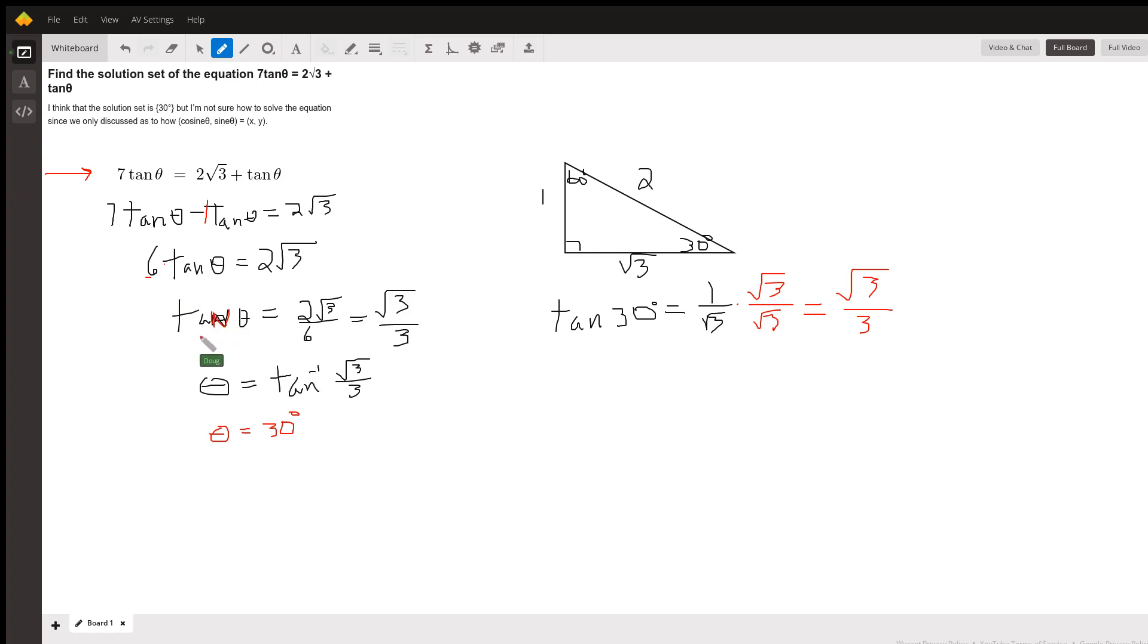we will have isolated—I didn't write a very good end there—the tangent of theta equals two radical three over six or radical three over three. To solve for theta, we use the tangent inverse function. Theta equals the angle that has a tangent of radical three over three.